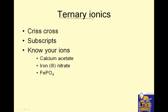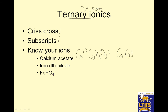Ternary ionics — don't worry so much about the name, it just means you have three or more atoms. Still crisscross. Watch your subscripts and know your ions. Calcium is plus 2, and on the first day of school I gave you a list of ions you need to memorize. Acetate is C₂H₃O₂ negative 1. Now when I crisscross this, I have two acetates — that 2 means I have two acetates — so that goes in parentheses with the 2 outside.